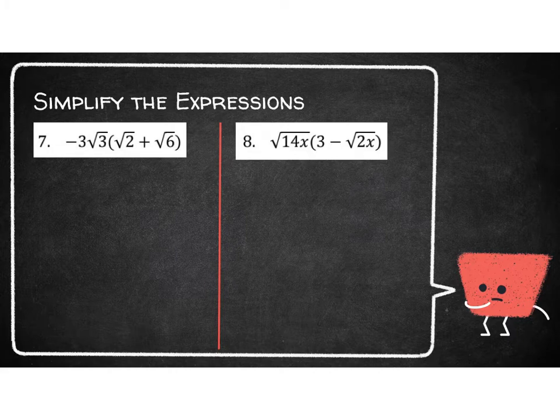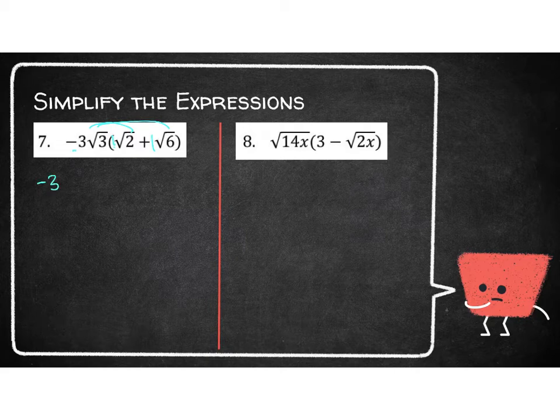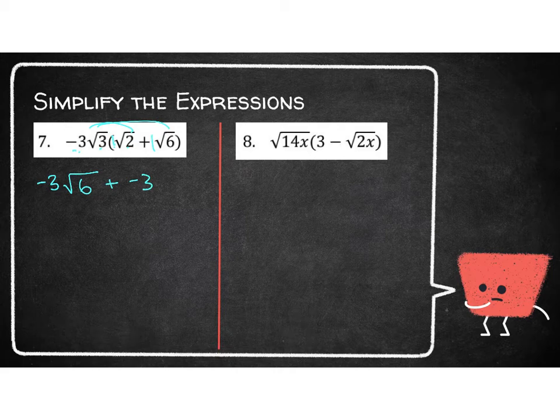Now I have negative 3 root 3 times the quantity square root of 2 plus square root of 6. Those two things need to be distributed. The outside coefficient for both terms is 1, so I've got negative 3 times 1, which is negative 3, and underneath the radical 3 times 2, which is 6. Then I have negative 3 times 1 again, which is negative 3, and underneath the radical 3 times 6, which is 18.